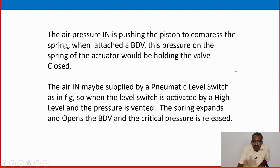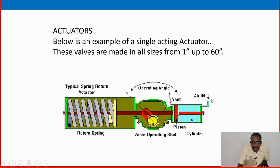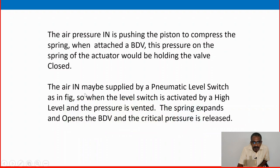The air pressure pushing the piston compresses the spring. When attached to a BDV, the pressure on the spring of the actuator would be holding the valve closed. Air in may be supplied by a pneumatic level switch, as in the figure. When the level switch is activated by a high level and the pressure is vented, the spring expands and opens the BDV as a critical pressure release.